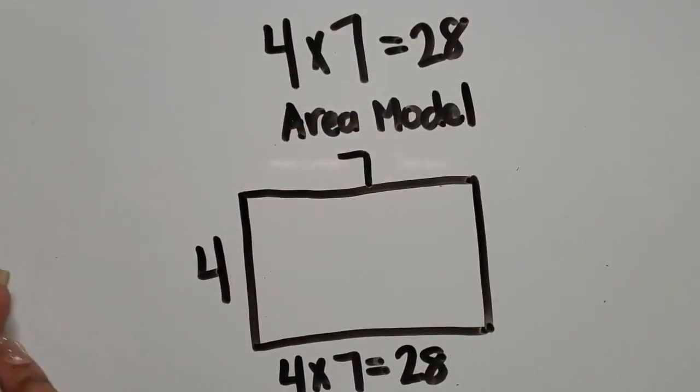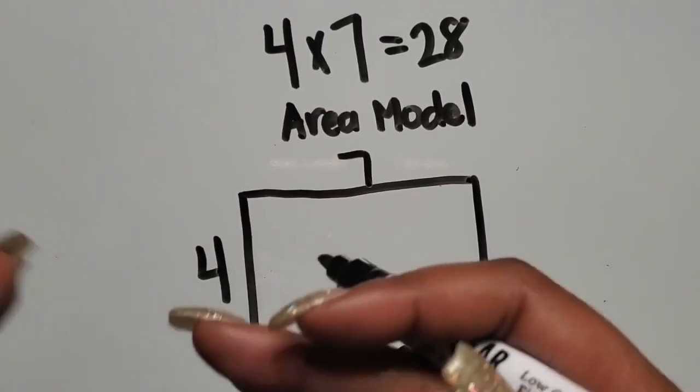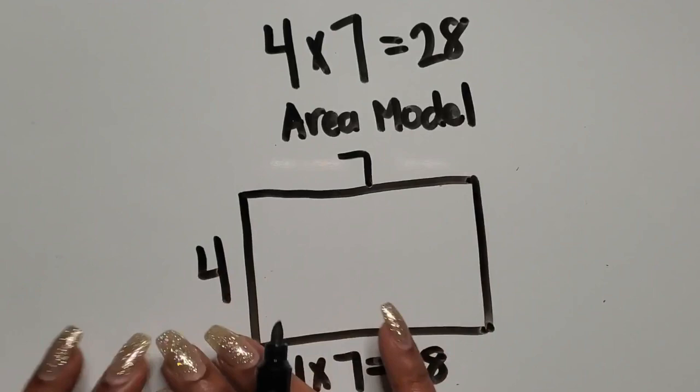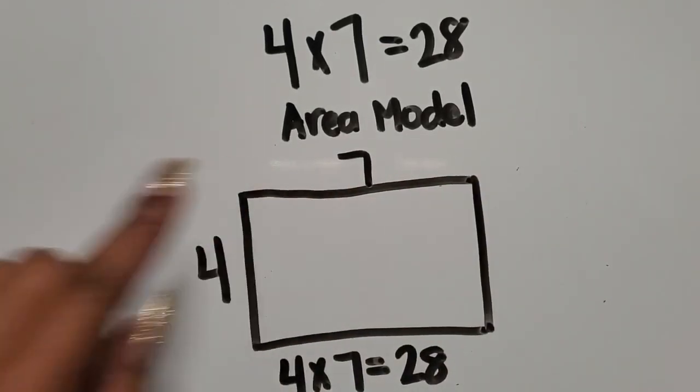We took it from an array or equal groups to an array to just representing area with the grid. Now we took the grid out so that they just see the representations using numbers.